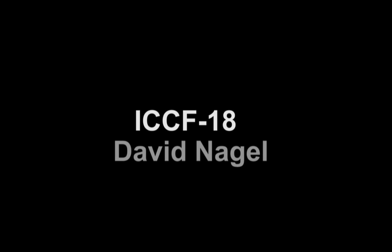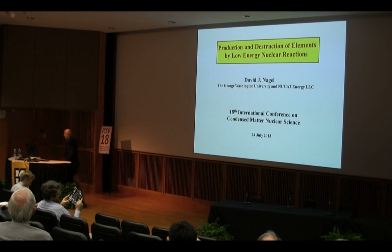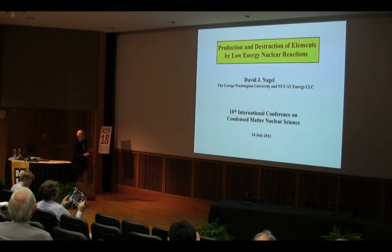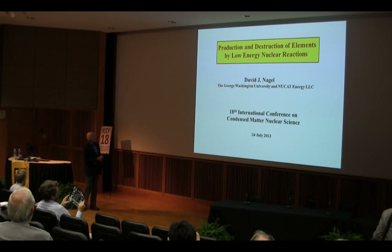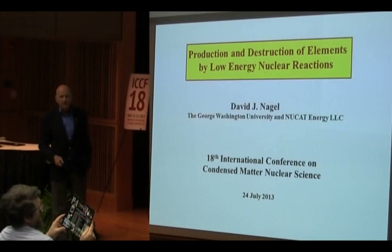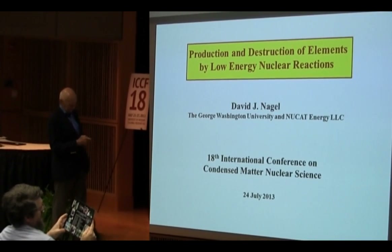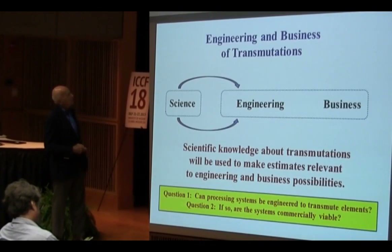This talk is about money — two kinds of money. One is the possibility of making money by producing valuable materials — think Platinum. And the other is the requirement, if you want to destroy bad elements like fission waste, to spend money. So minimizing that. That's the setup.